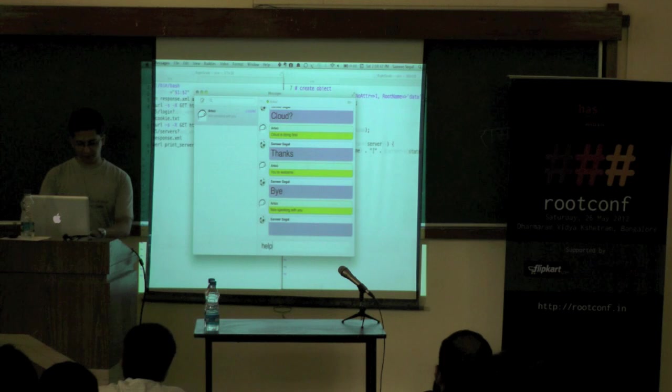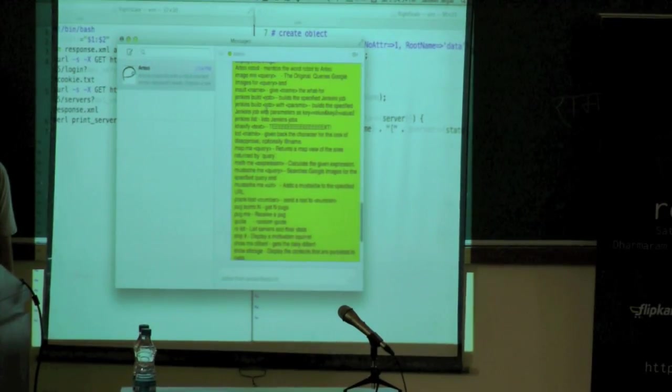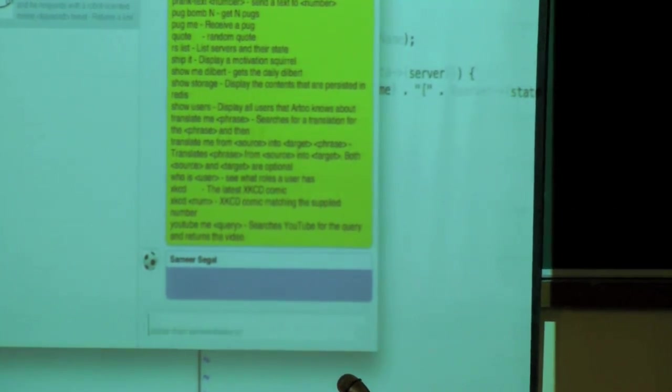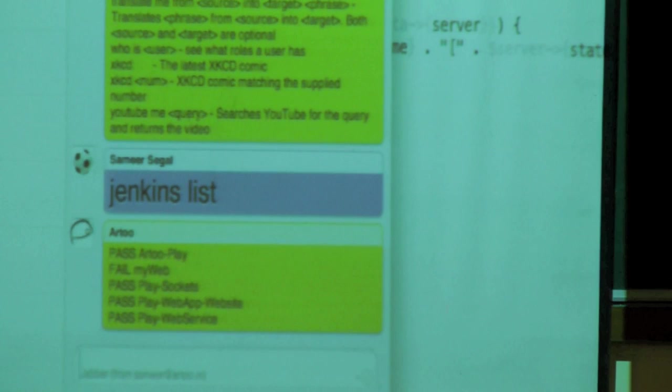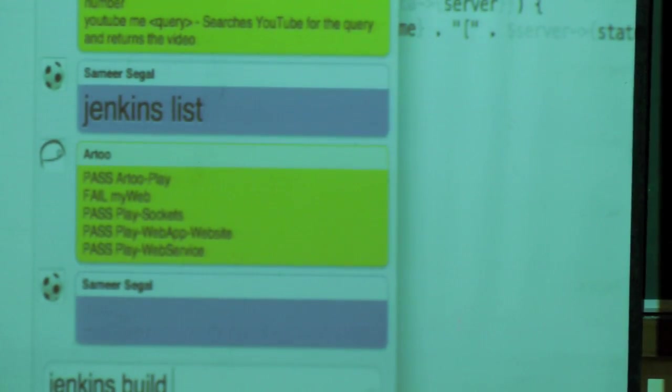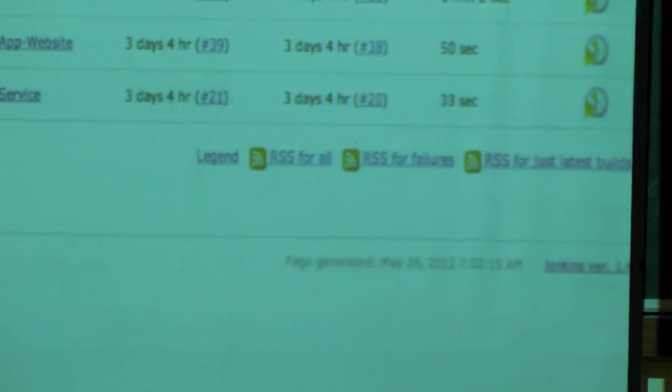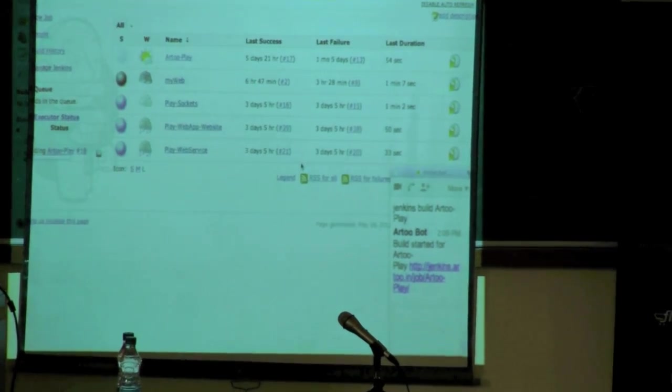If you want to know what all it is capable of, you can simply type help and you will get a list of commands that it can do. We have connected this to talk to our Jenkins. So, I am going to say Jenkins list. It is showing me a list of jobs that we have running. It is saying, okay, this one has passed, this one has failed. Can you see this? Text is okay.